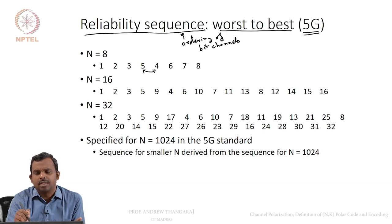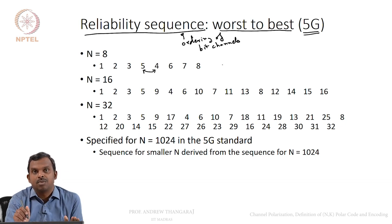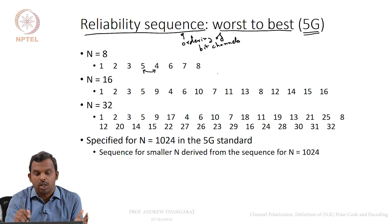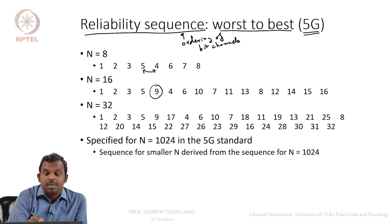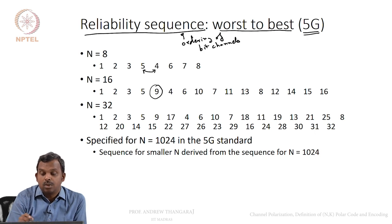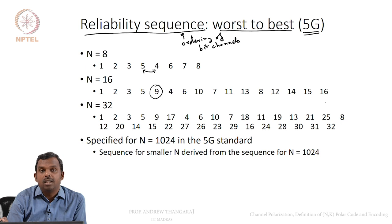The way to find this reliability sequence involves some simulations and is not very precise. For N equals 16, the sequence starts 1, 2, 3, 5, then 9, then 4, 6, 10, and so on. For instance, the 14th bit channel is better than the 12th bit channel — that is how you read it. This is the sequence in which channel quality is ordered; there are 16 bit channels ordered accordingly. The same applies for N equals 32.